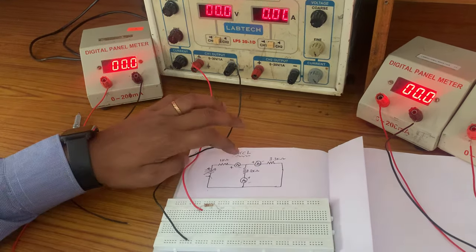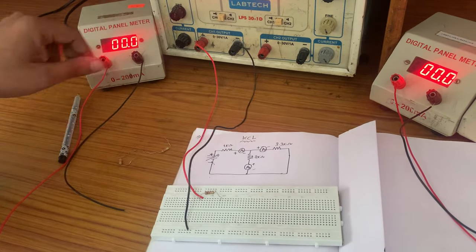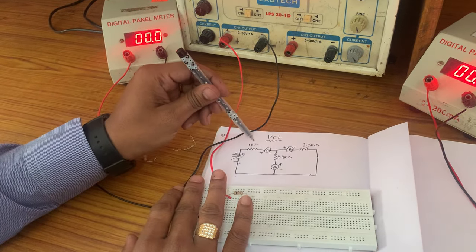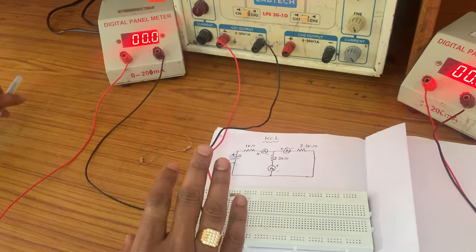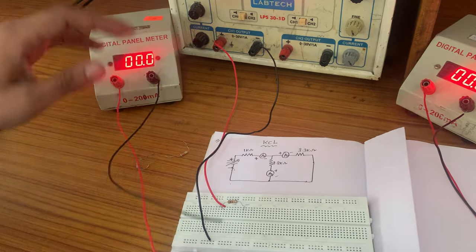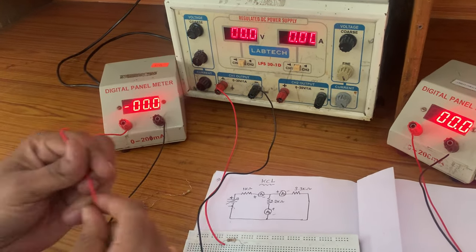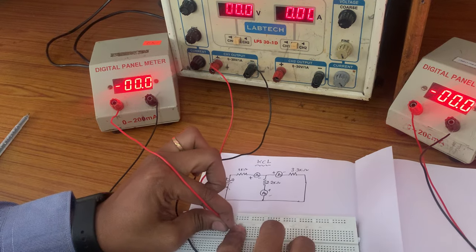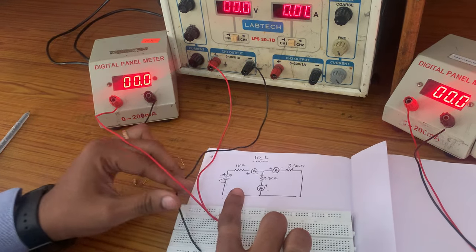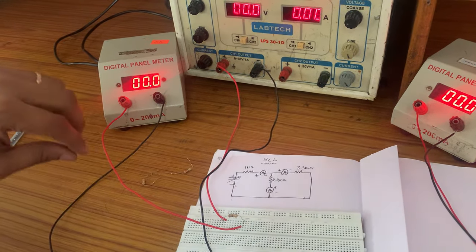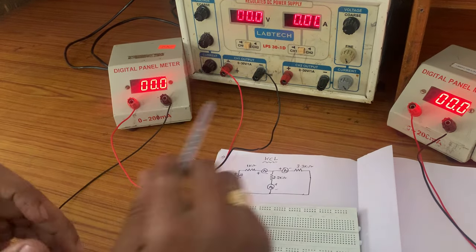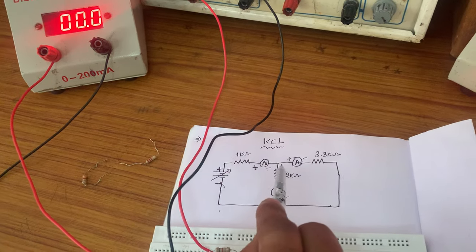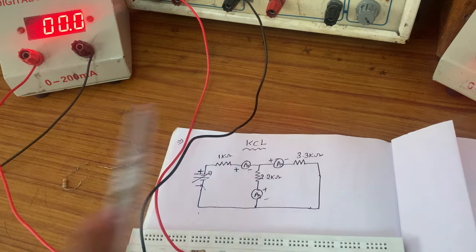This is Ammeter 1. Ammeter 1 positive is connected to the 1 kΩ second terminal. Next, this ammeter 1 negative and the 2.2 kΩ first terminal are both connected together.